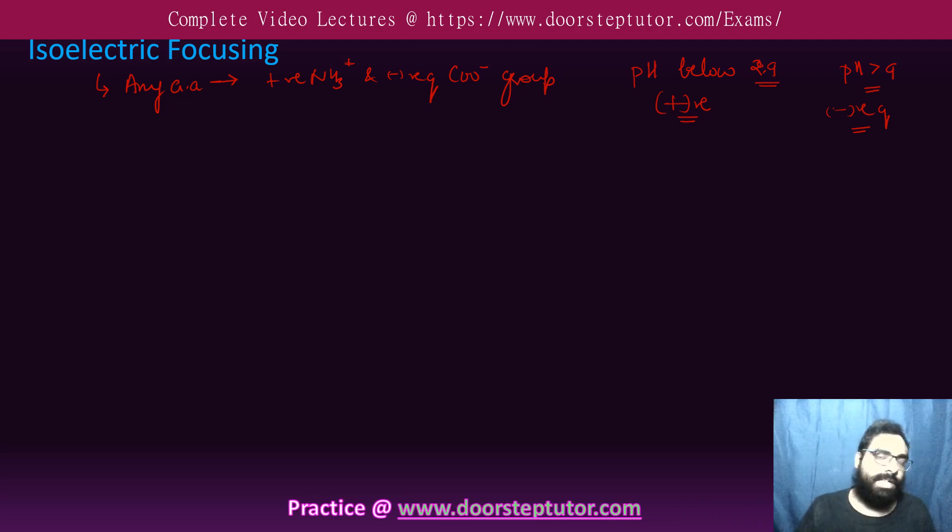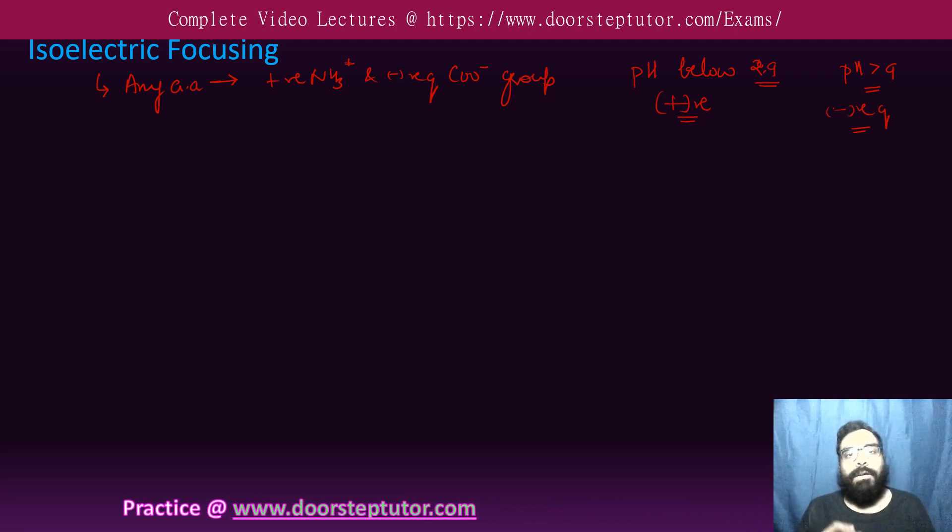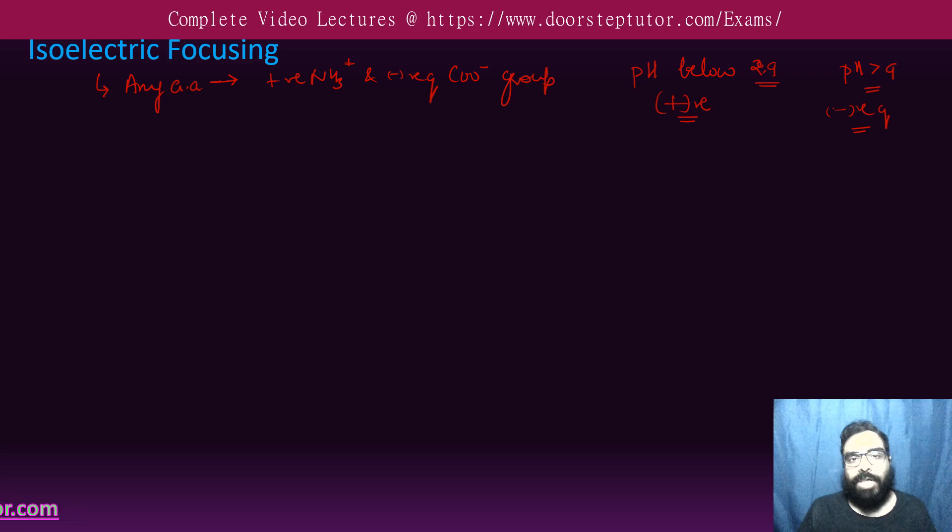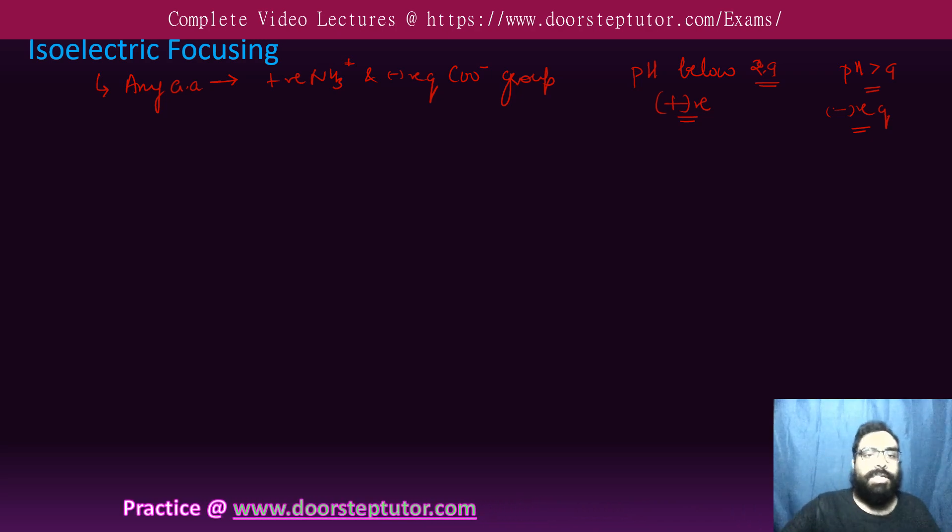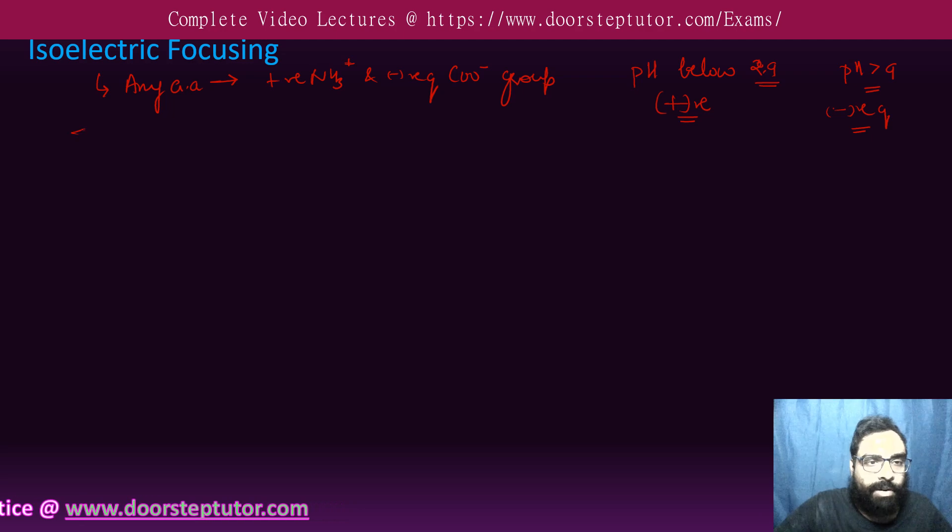So your doubt might be that if at pH 2.9 or below the positive charge state is there, at pH more than 9 the negative charge state is there, then there will be a state where the amino acid will be in both positive and negative charge state. Yes, that stage will be around, if you take the average of 2.9 and 9, around pH 5.7 or so. The amino acid will be in both the states, that is positively and negatively charged. This state is known as zwitterionic form.